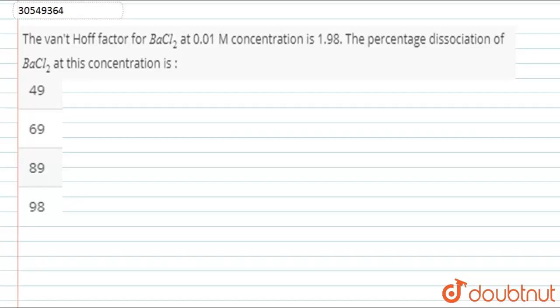Look at this question. The Van't Hoff factor for BaCl2 at 0.01 molar concentration is 1.98. The percentage dissociation of BaCl2 at this concentration is... Here we have Van't Hoff factor given.